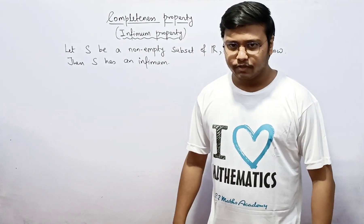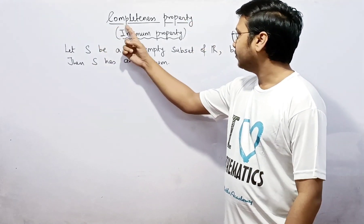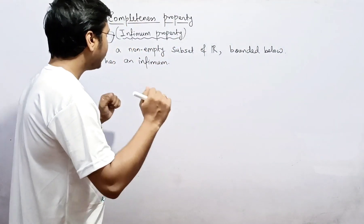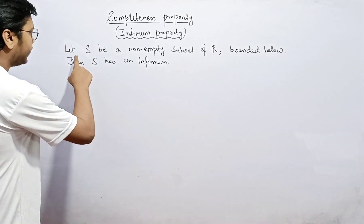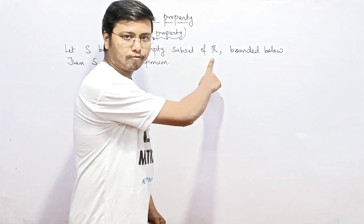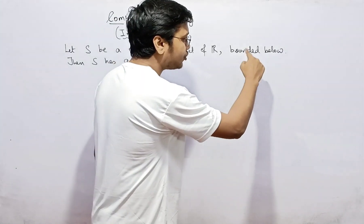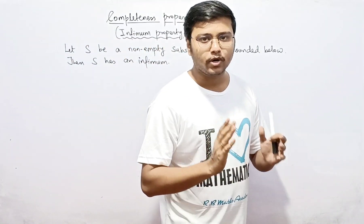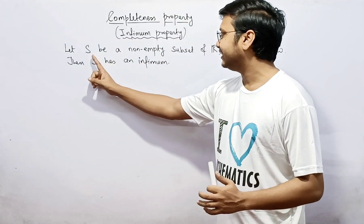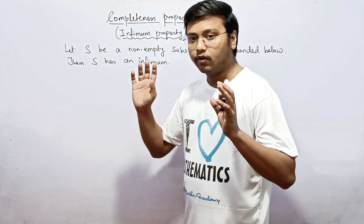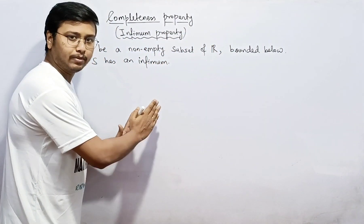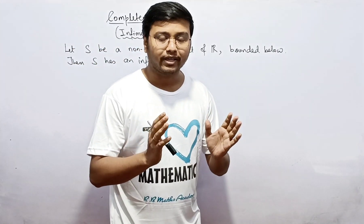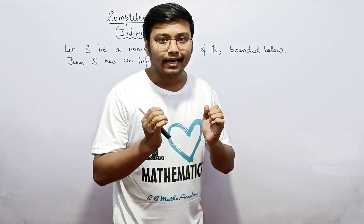In today's video we are going to talk about the completeness property, that is the infimum property. The statement says: let S be a non-empty subset of real numbers which is bounded below, then S has an infimum — meaning the infimum is going to exist if the set is non-empty and bounded below. When proving this, I am going to consider that the supremum property holds as an axiom.